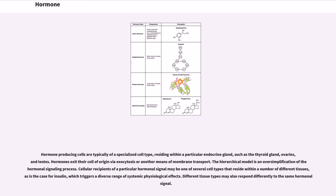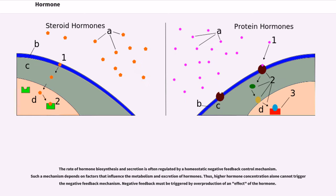Hormones exit their cell of origin via exocytosis or another means of membrane transport. The hierarchical model is an oversimplification of the hormonal signaling process. Cellular recipients of a particular hormonal signal may be one of several cell types that reside within a number of different tissues, as is the case for insulin, which triggers a diverse range of systemic physiological effects. Different tissue types may also respond differently to the same hormonal signal. The rate of hormone biosynthesis and secretion is often regulated by a homeostatic negative feedback control mechanism. Such a mechanism depends on factors that influence the metabolism and excretion of hormones.